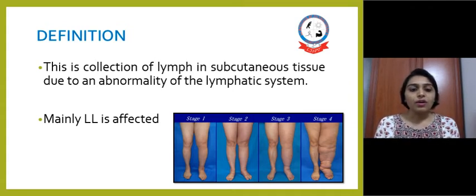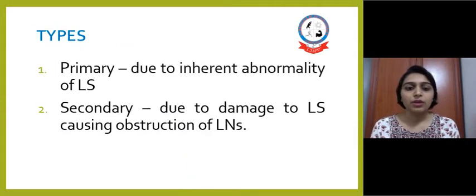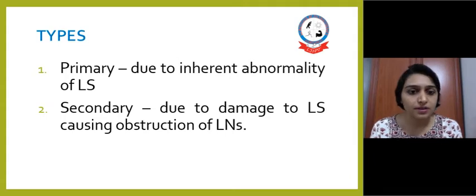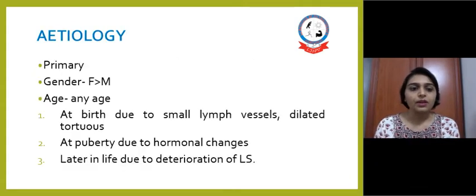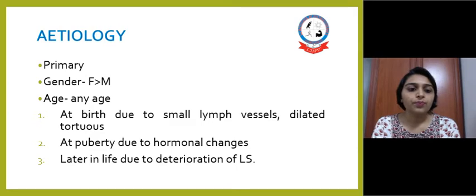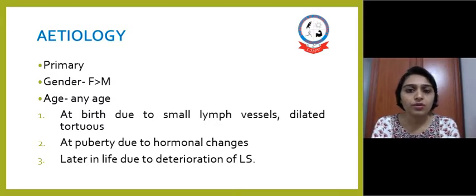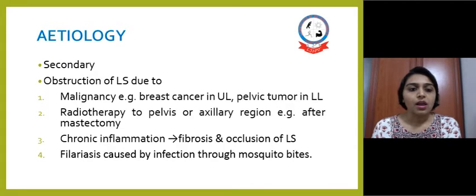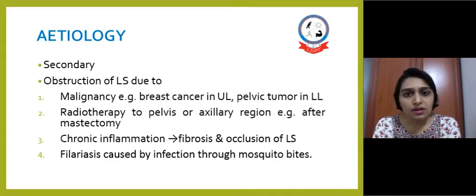Lower limbs are mainly affected. The types of lymphedema are primary and secondary. Primary lymphedema is due to an inherent abnormality of the lymphatic system, while secondary is due to damage causing obstruction to the lymph nodes. For primary lymphedema, females are more affected than males and it can occur at any age. At birth it is due to small lymphatics which may become dilated and tortuous; at puberty it is due to hormonal changes; and later in life it is due to deterioration of the lymphatic system.